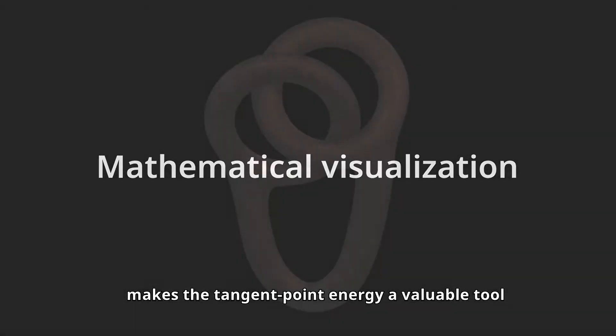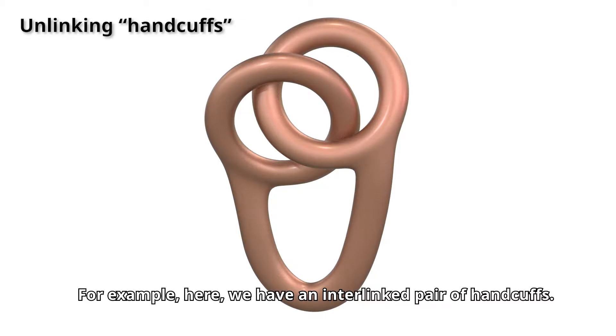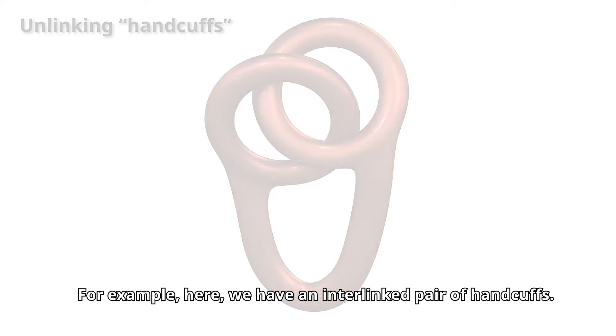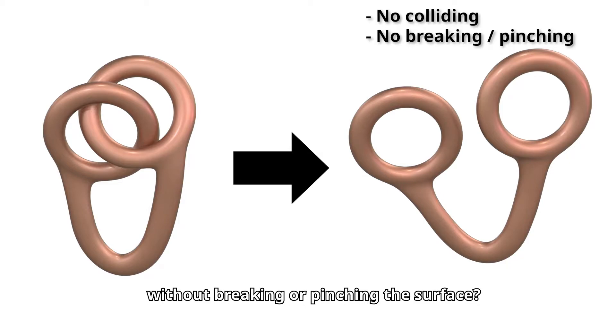The ability to optimize surfaces while avoiding collisions makes the tangent point energy a valuable tool for visualizing such isotopies. For example, here we have an interlinked pair of handcuffs.